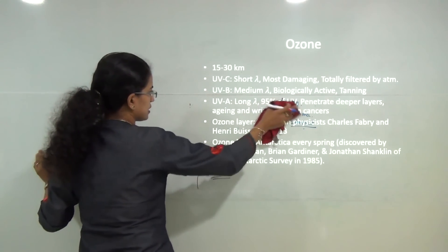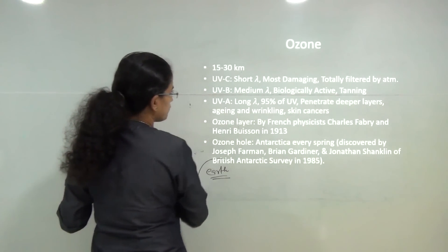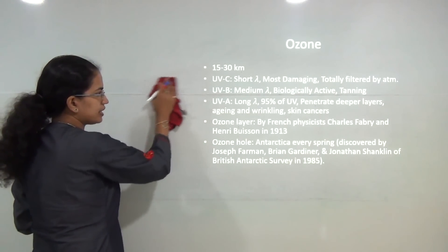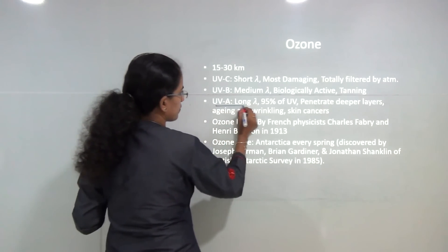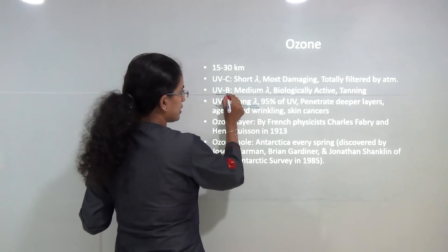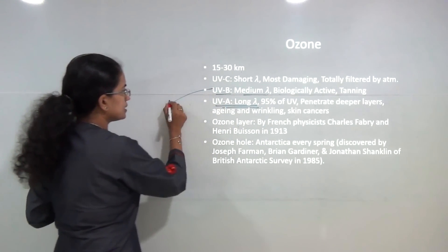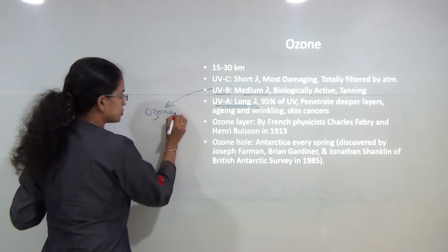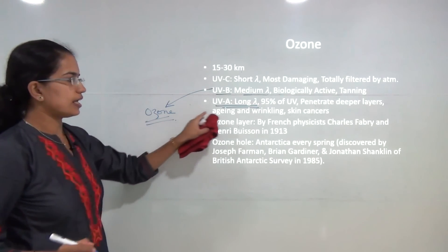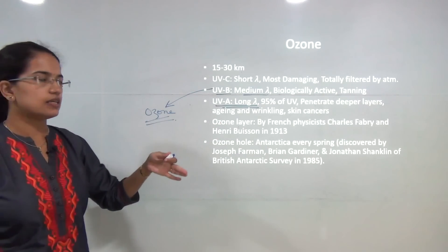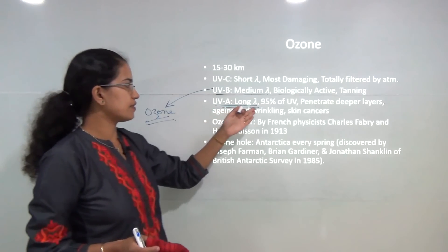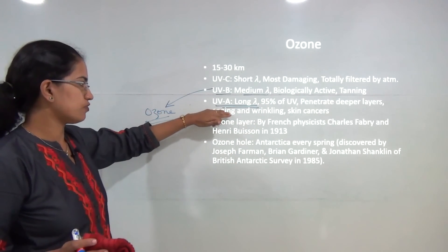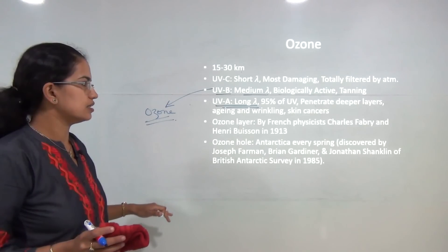UVA, ultraviolet A, has the longest wavelength. Ultraviolet B has a medium wavelength and is mainly protected by ozone. Ultraviolet A penetrates much deeper, and 95 percent of the ultraviolet radiation that reaches the earth is composed of UVA.